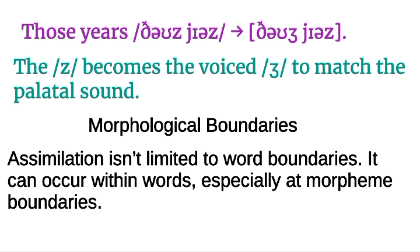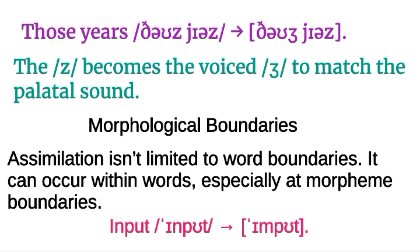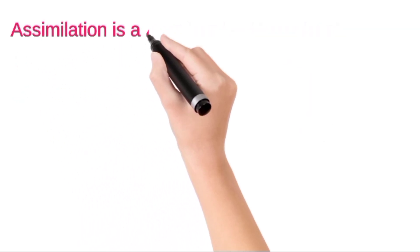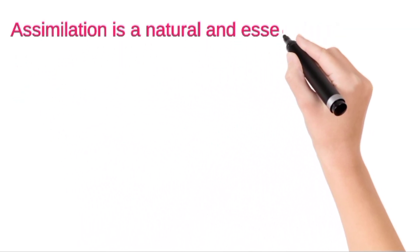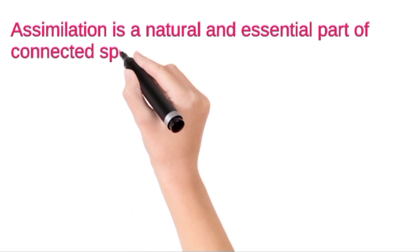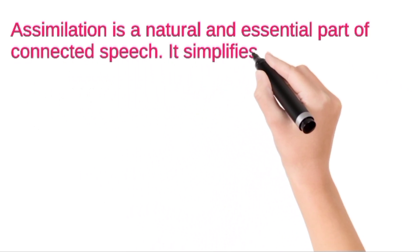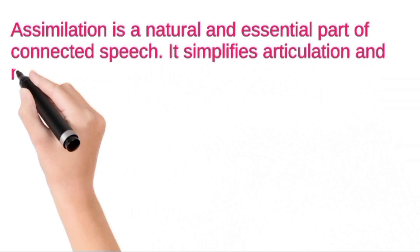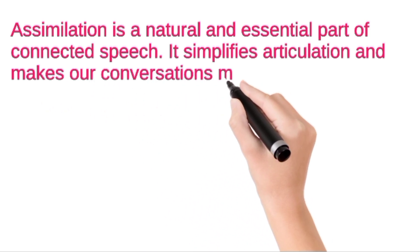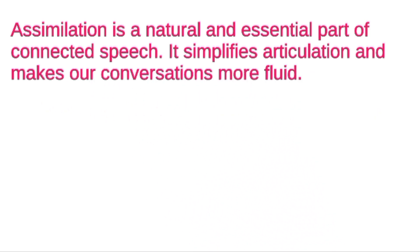An important concept is that assimilation isn't limited to word boundaries — it can also occur within words. For example, the word 'input': in quick rapid speech we say 'imput,' where the N sound becomes an M sound. Assimilation is a natural and essential part of connected speech. It simplifies articulation by removing difficult sounds and makes conversation more fluid.